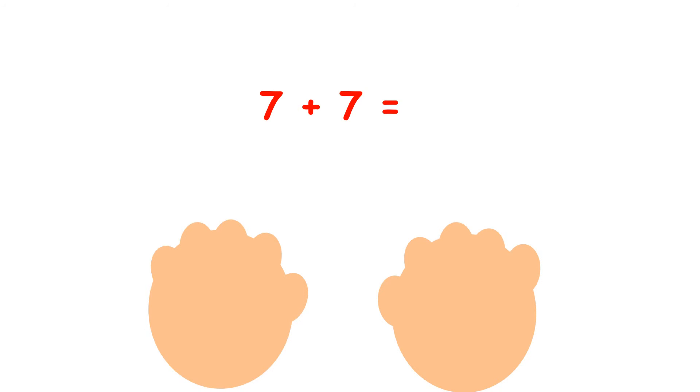So now we have 7 plus 7. When we're adding the same number to itself we sometimes say we're doubling the number. So 7 plus 7 is double 7. If we had 2 plus 2 that would be double 2, 5 plus 5, double 5 and so on. But we've got 7 plus 7 so let's count on from 7.